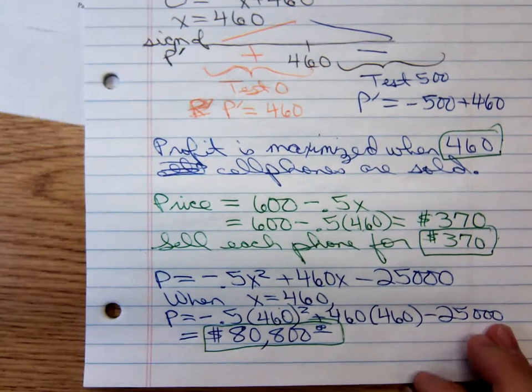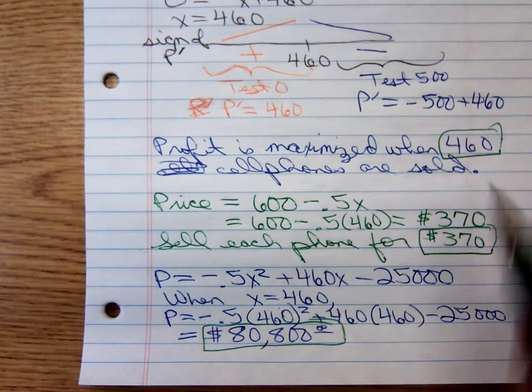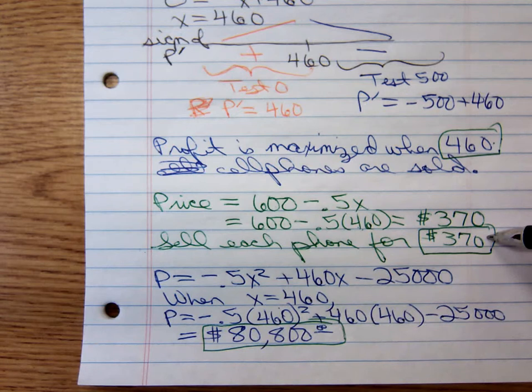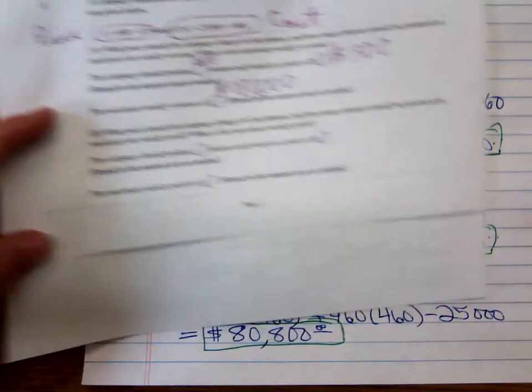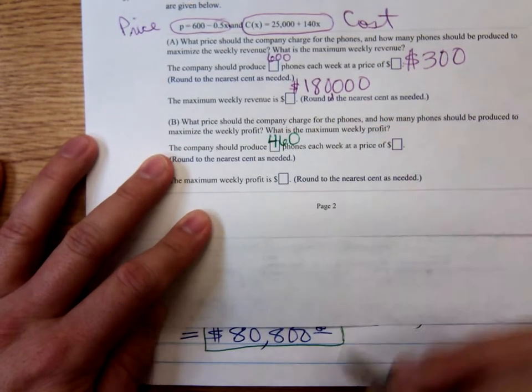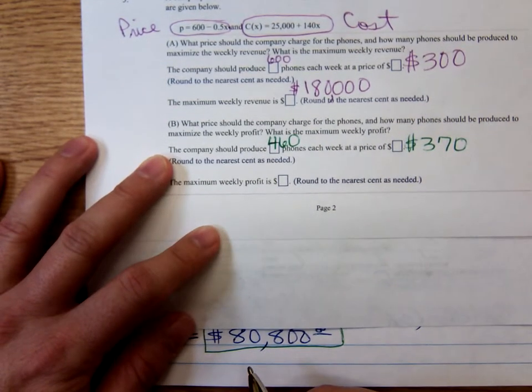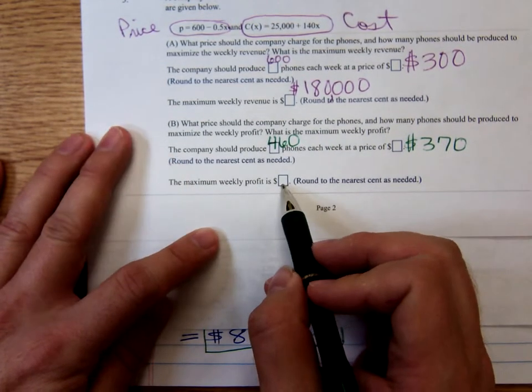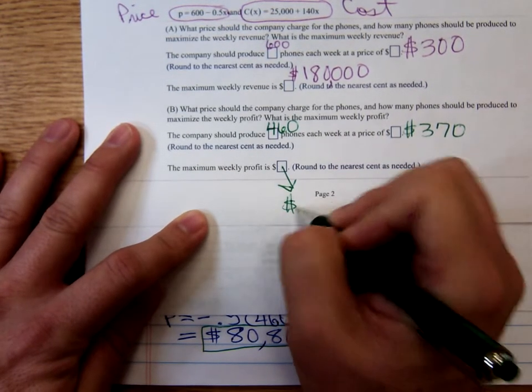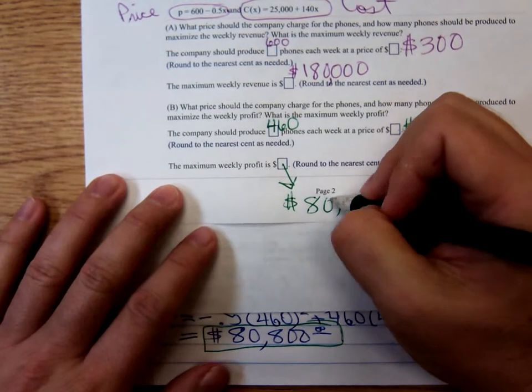So let's come back to the original problem and fill in those blanks that we found. We should sell 460 cell phones at $370 in order to maximize profit. So 460 cell phones, that's the first box, should be sold at $370. And in that event, that profit, the maximum profit, is $80,800. That's an eight there.